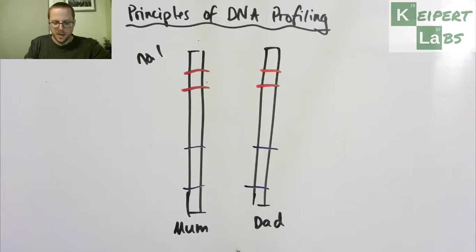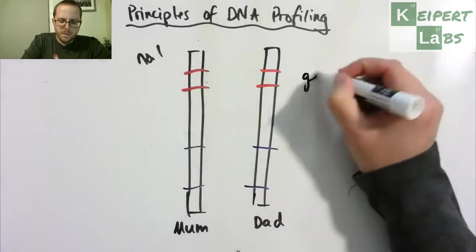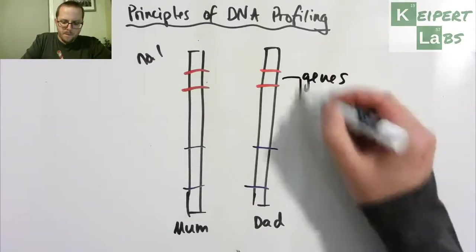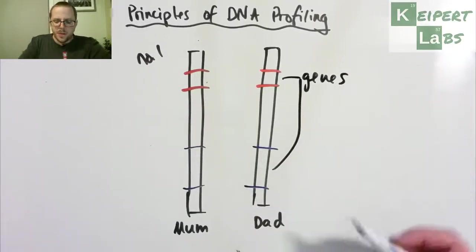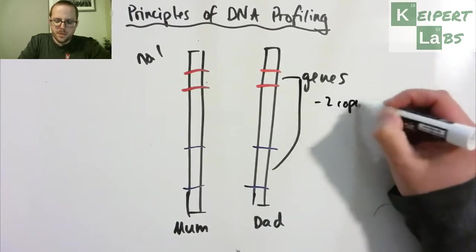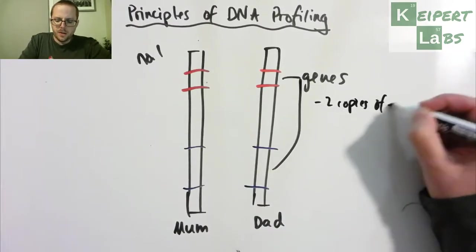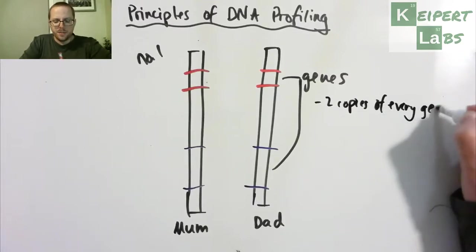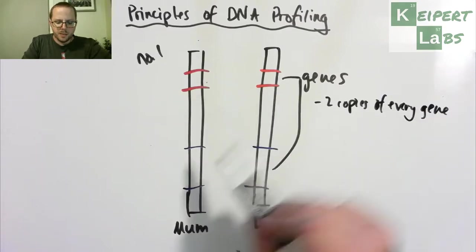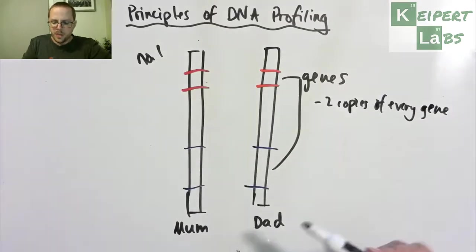These are genes, the sections that actually code for particular features. But what that means is that you've got two copies of every gene, because you have the same gene here and here. You had the version from your mum and version from your dad. Same thing here and here. So two copies of every gene.